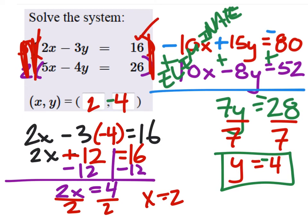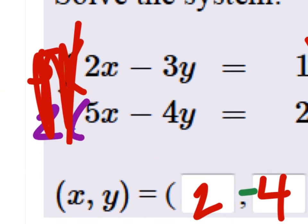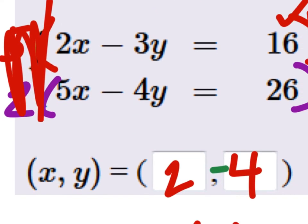So that checks off the first one. Because that gave us a true statement for both values of X and Y. So we would want to go into the second equation and just check. X is 2, Y is 4.